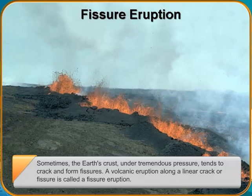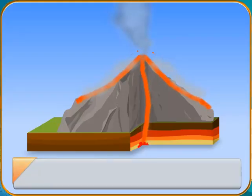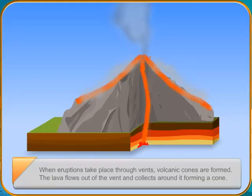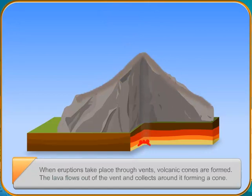When eruptions take place through vents, volcanic cones are formed. The lava flows out of the vent and collects around it, forming a cone. Repeated eruptions cause newer layers of lava to collect over the older lava and ash, thereby adding to the height of the volcano.